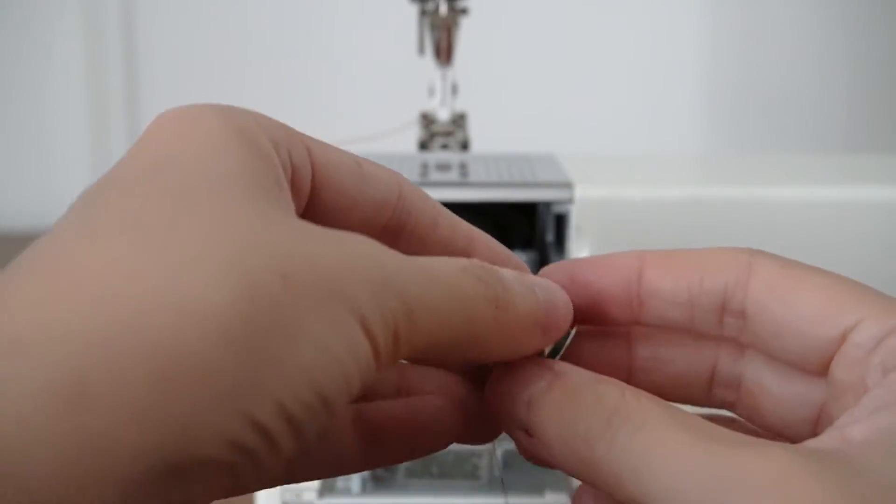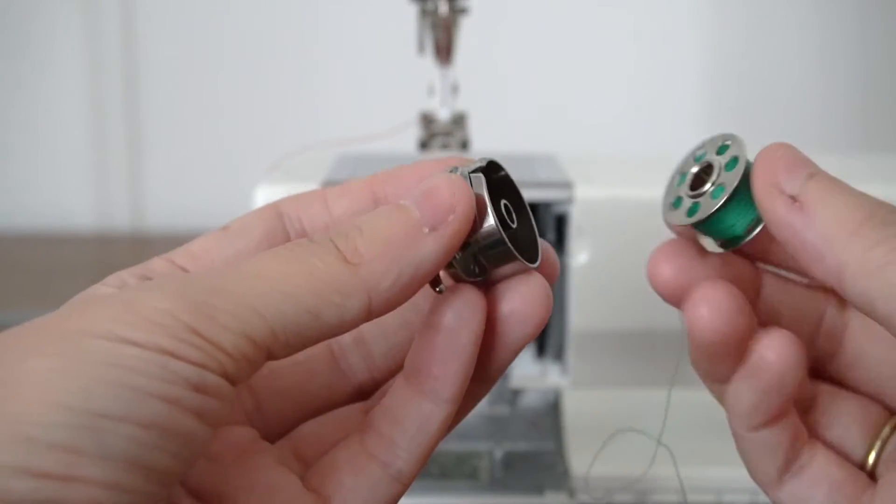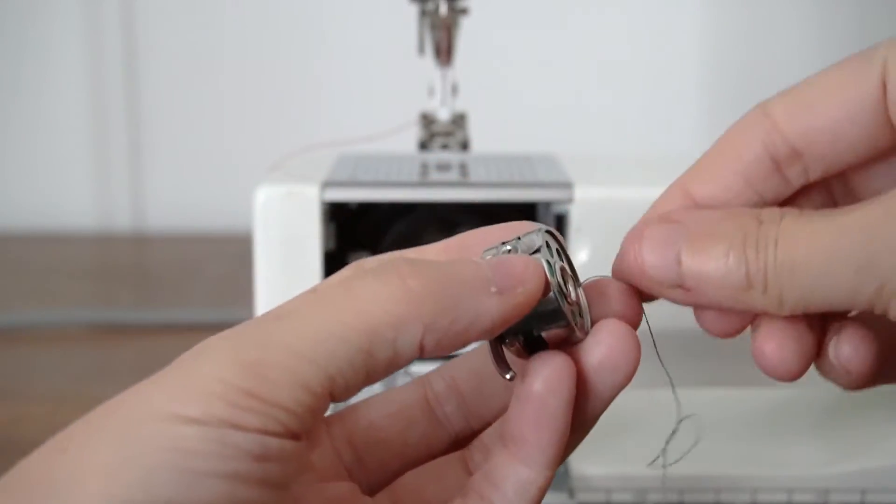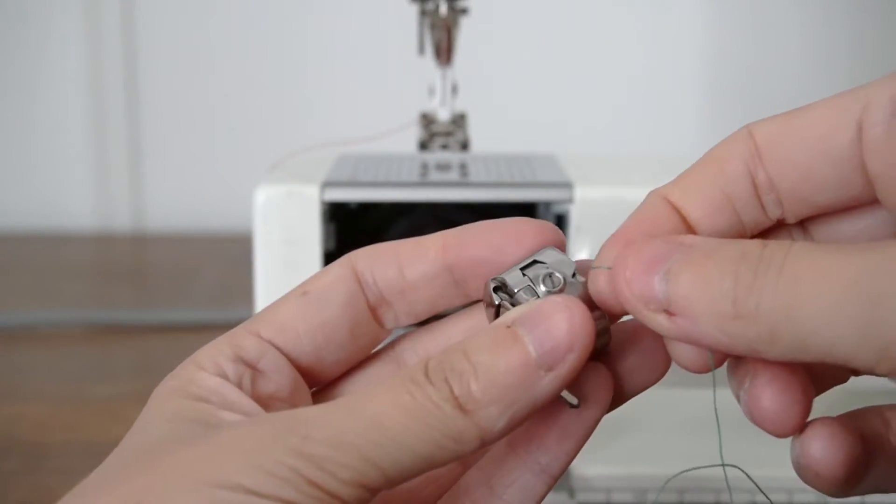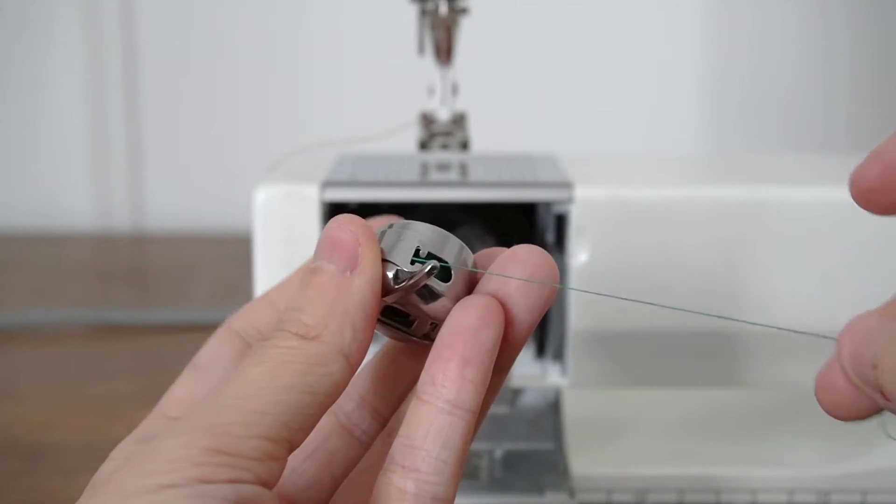And if you want to take it out, all you literally do is just pull it out. So I'll show you one more time. Stick it in, pull the thread up into that lip, underneath and into the window.